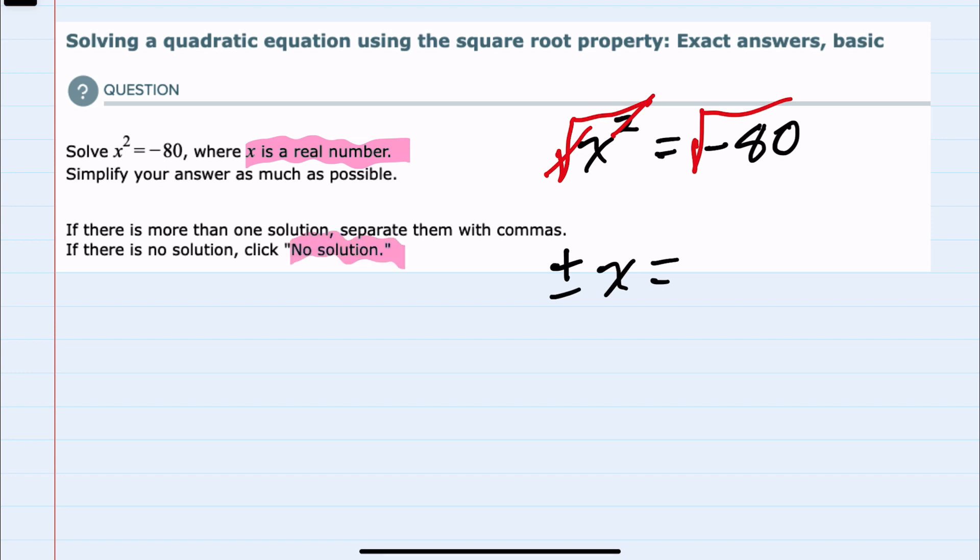But if we were looking at an example where this were, say, a positive 80, then we could simplify the square root and have two answers: the positive square root and the negative square root.